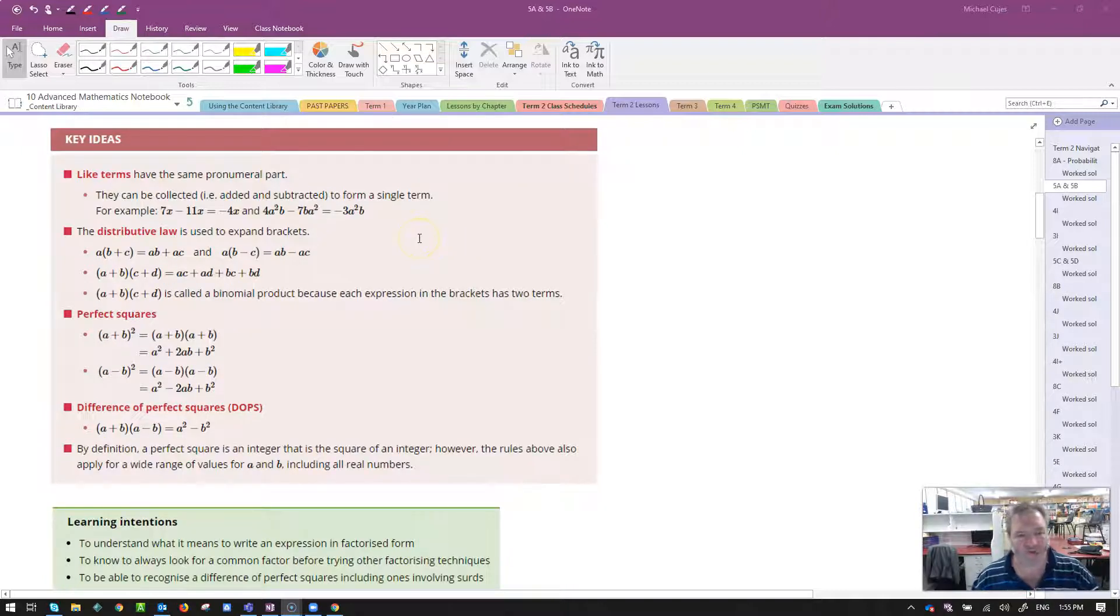Quick refresh of some terminology. Like terms are terms with exactly the same pronumeral form. X and X are exactly the same, so they can be added or subtracted. Also, a squared b and ba squared, even though they've been written the other way around, they are still the same. That's two a's and a b being multiplied together, so they are like terms, and I could add 4 plus negative 7 to get negative 3 lots of a squared b.